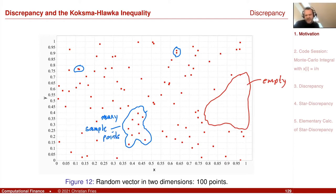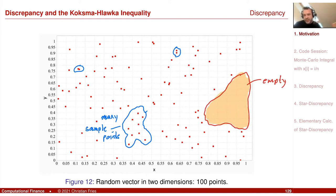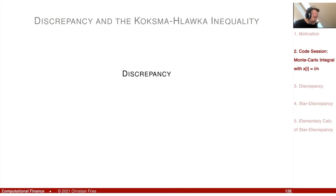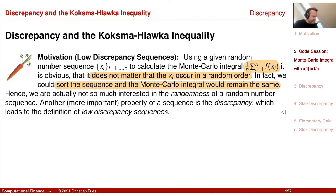Clearly this is a consequence of the randomness, but is it really a good property? Just think of a function where the function is maybe zero over a large region and only takes values in one small region. Then our integral would be zero because we do not have a sample point in that region. So maybe it's not a good property to have such structure with large empty spaces. We could order the sequence, and maybe the sequence could have more structure.